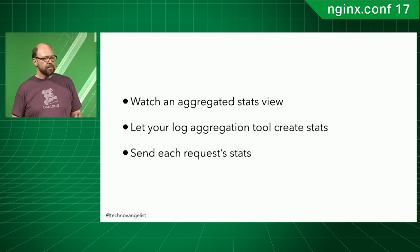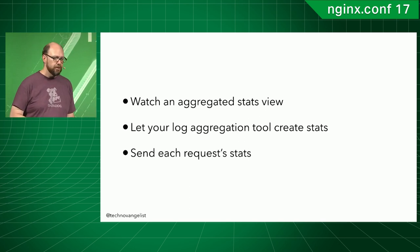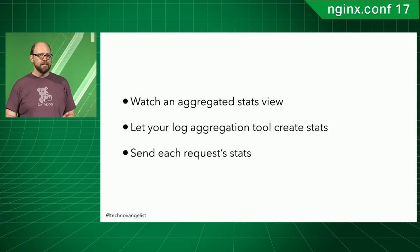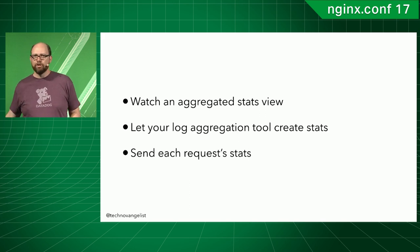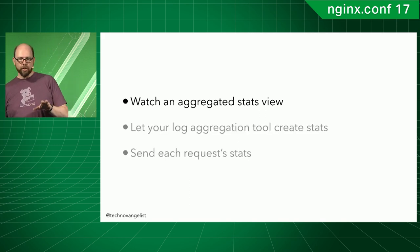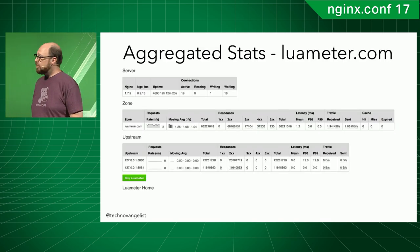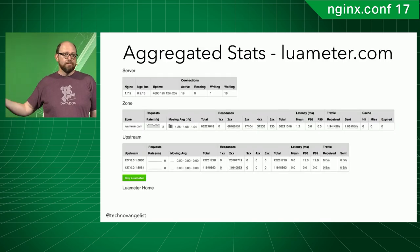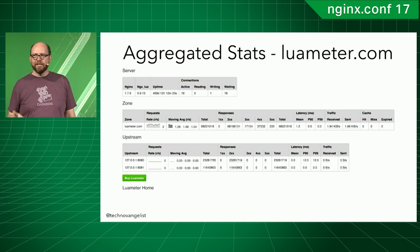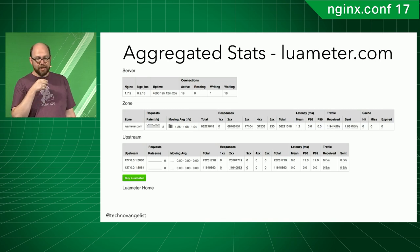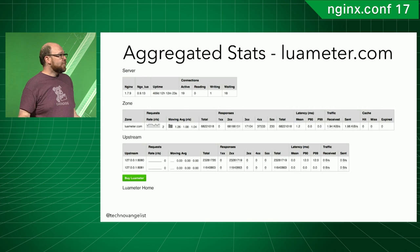Let's go back to my list of three things: aggregated stats view, log aggregation tool, or send each request's stats directly. Let's look at the first one. The first example I like to show is Luameter — pretty cool thing I found online. Basically $49 gets you all those metrics that you think are important but don't have access to on Nginx open source, and you can load it on multiple servers.